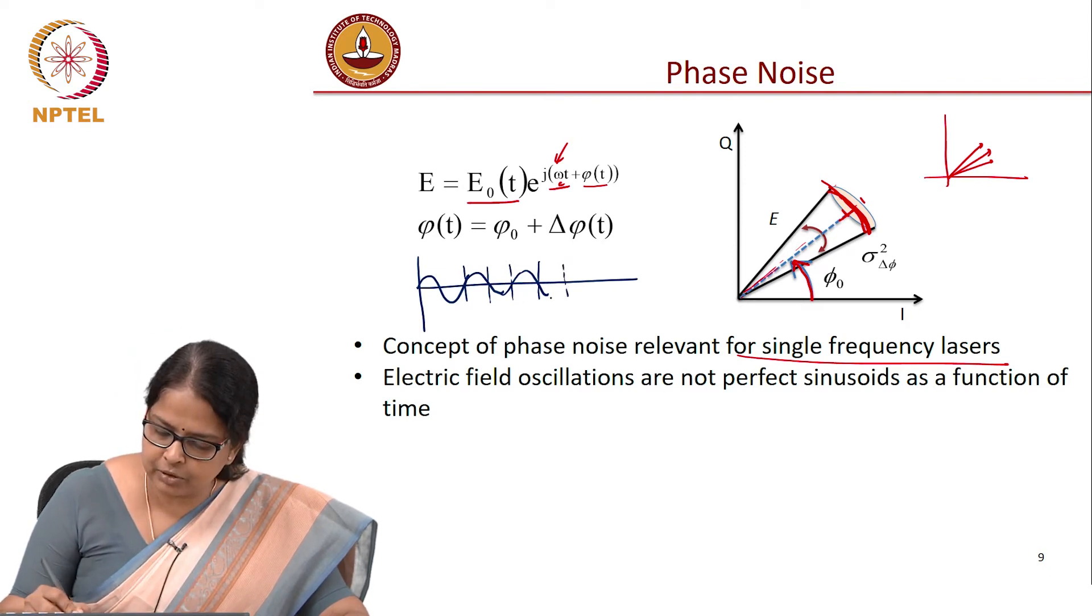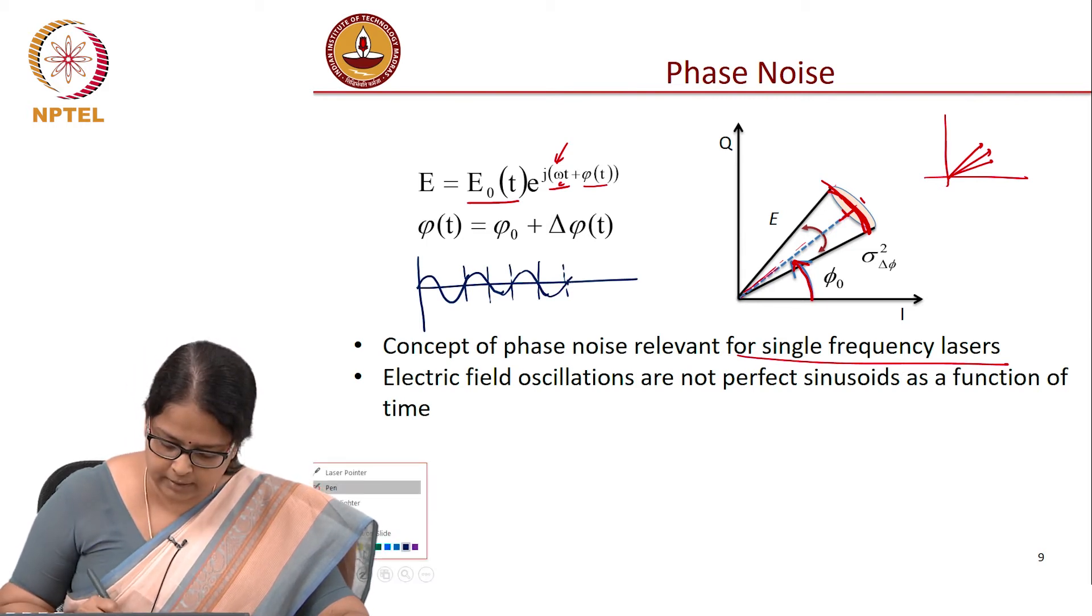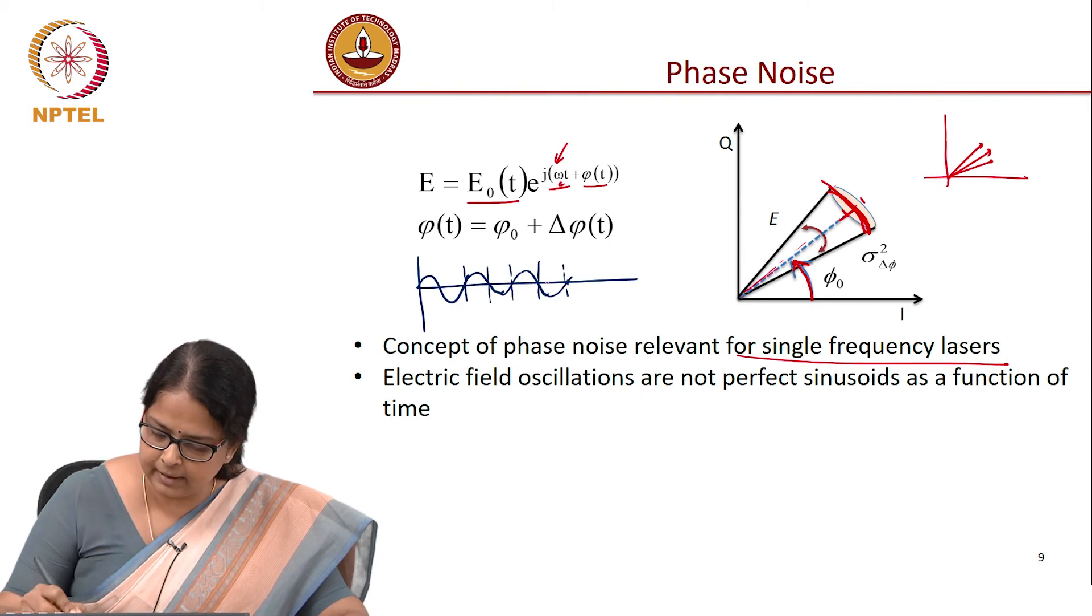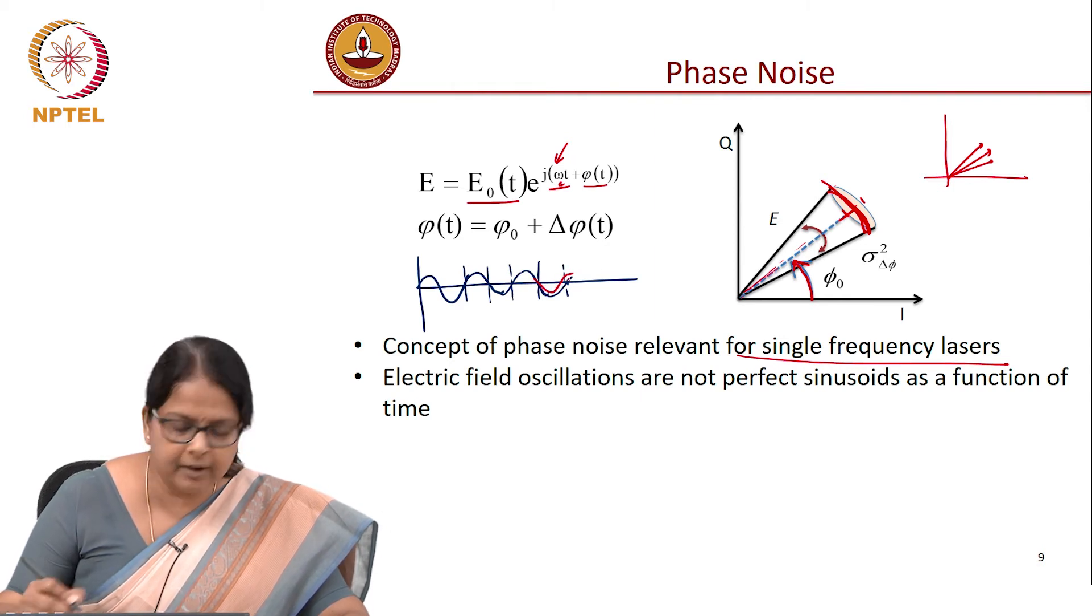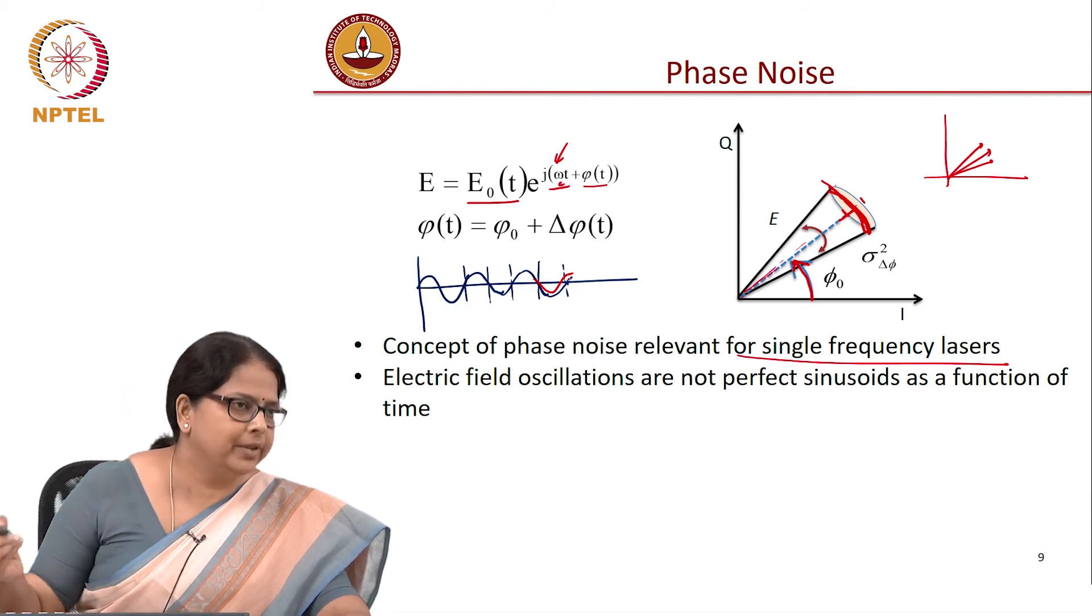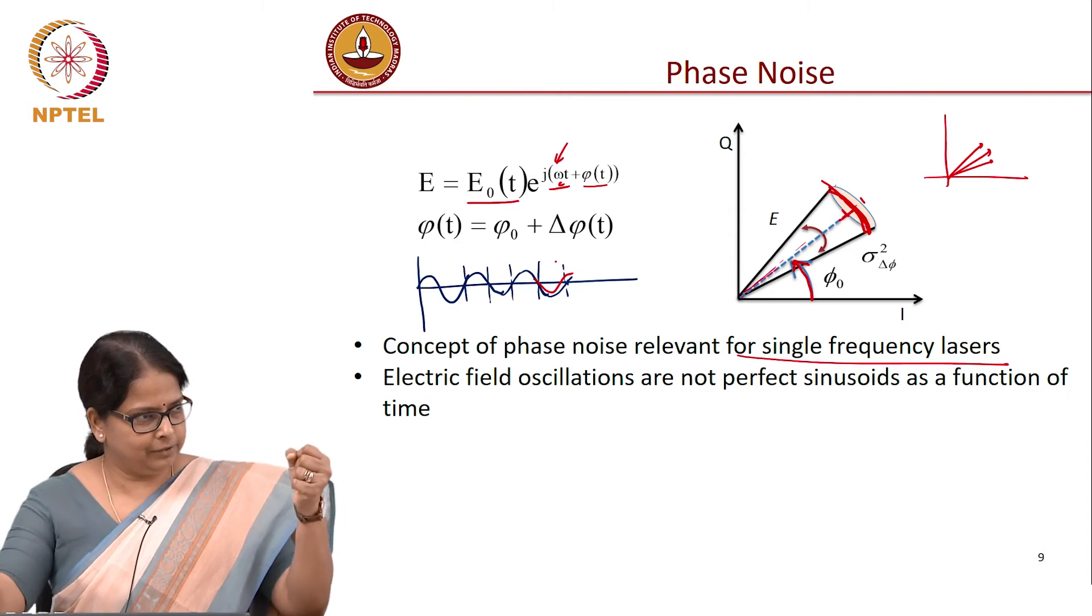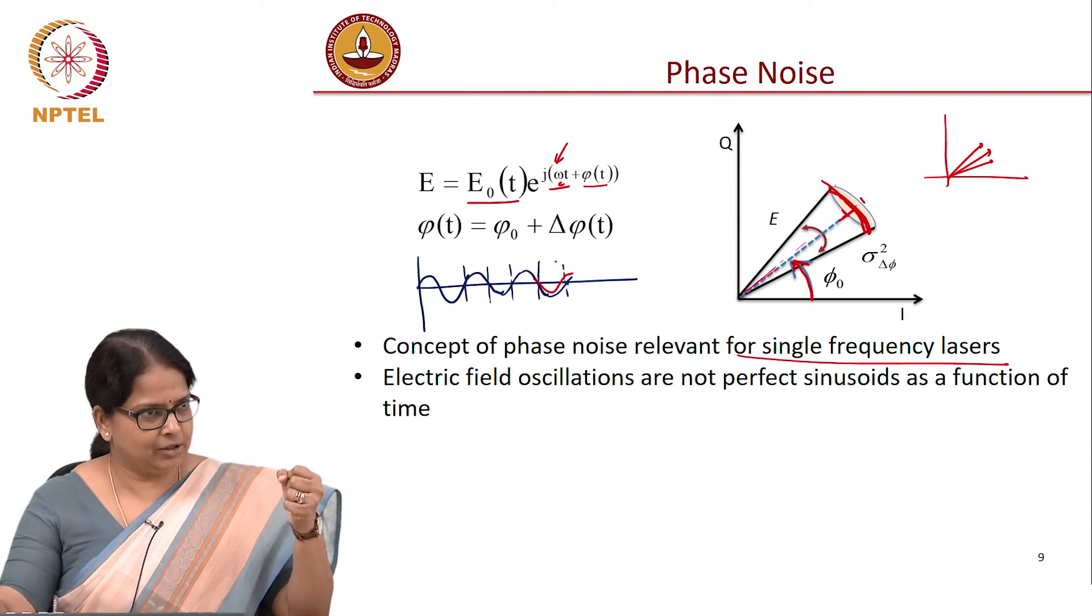And it is supposed to cross 0 here, but it does not cross 0. It crosses 0 slightly later or it may cross 0 slightly earlier. That is another way of looking at what this phase noise is. And this keeps, so it is as if the sinusoid is kind of stretching slowly.